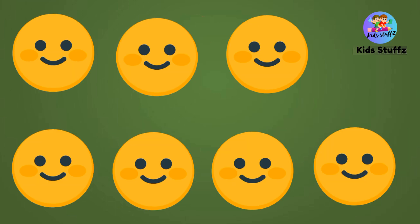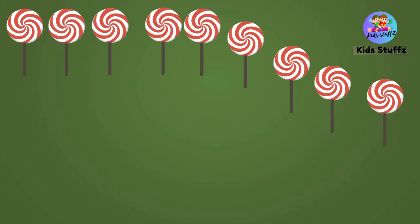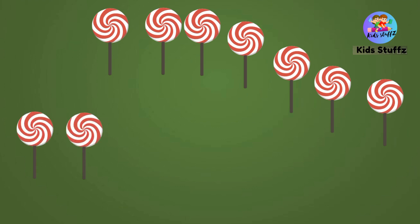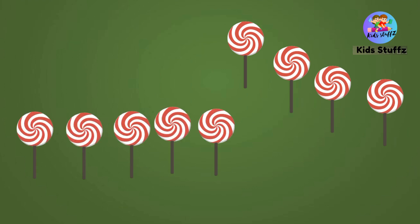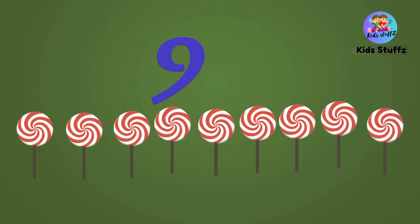These are smileys — let's count the smileys. One, two, three, four, five, six, seven — seven smileys. These are lollipops — let's count. One, two, three, four, five, six, seven, eight, nine — nine lollipops.